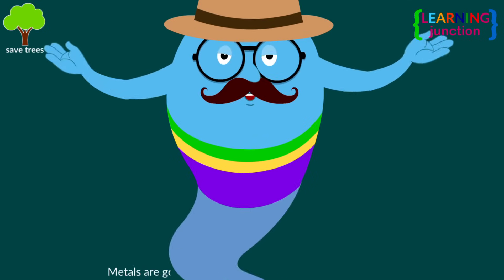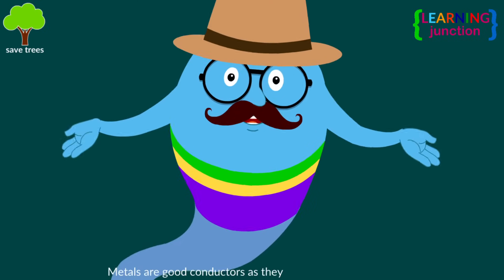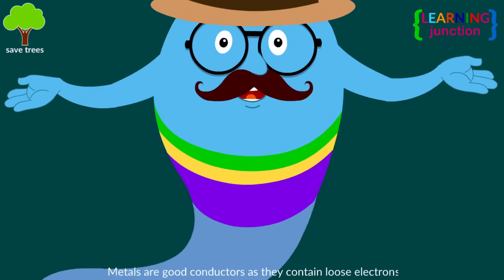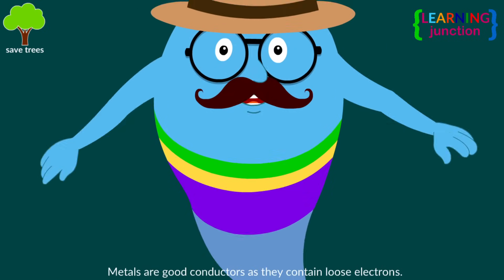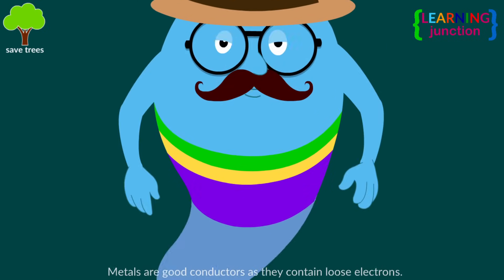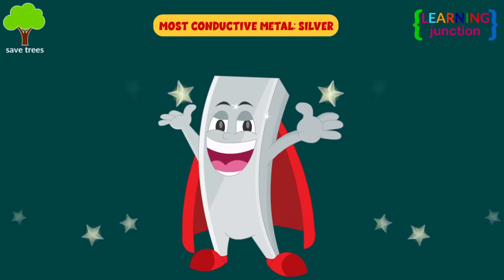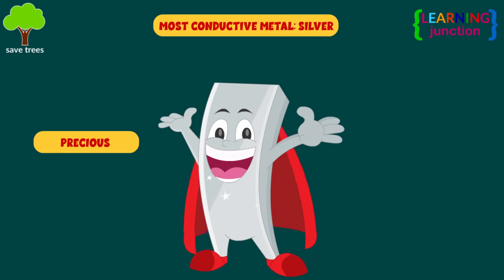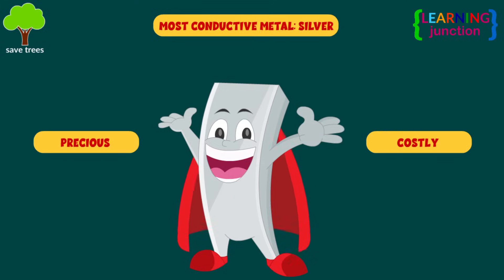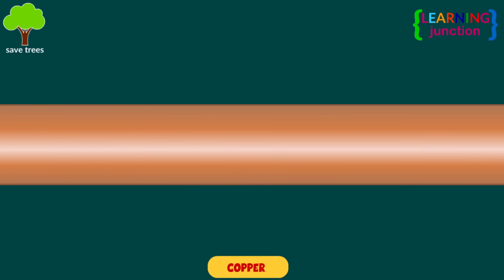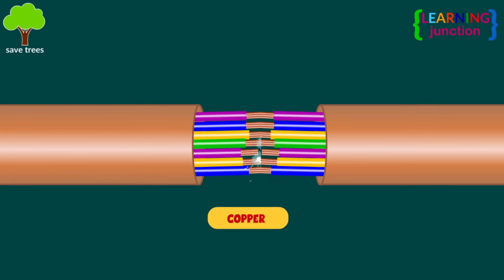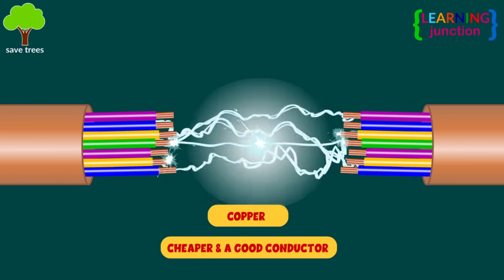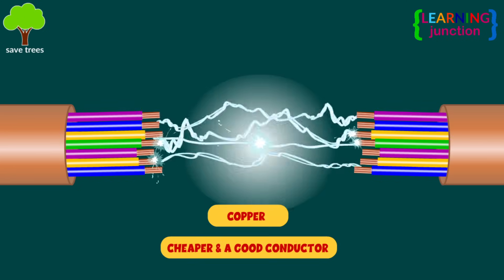Metals are good conductors as they contain loose electrons. The most conductive metal is silver. It is a precious and costly metal, so copper is used, which is cheaper and a good conductor.